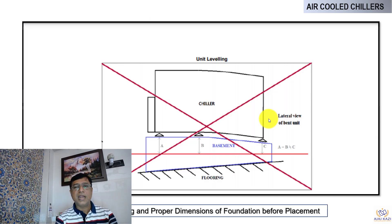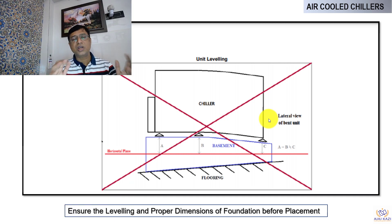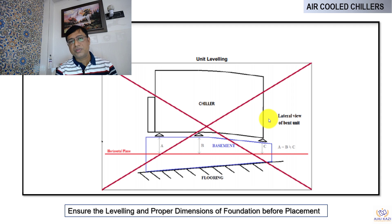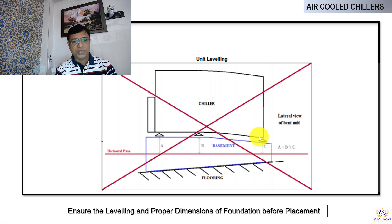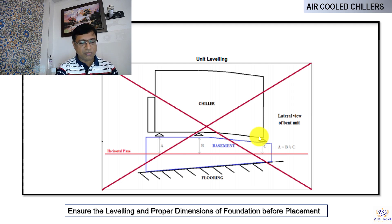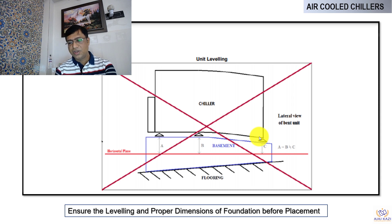An important aspect of chiller installation is that we generally mount them on a foundation, or when placed on top of buildings we create a structure on which the chillers are installed. It is important to ensure the structures are leveled properly so that the units are leveled properly, otherwise we will have issues. We should also ensure the proper dimensions of the chillers match the foundation being created. Most of the time, foundation work is done by civil contractors and when the chiller arrives there is a mismatch of communication — they do not fit on the foundation properly and we lose a lot of time.